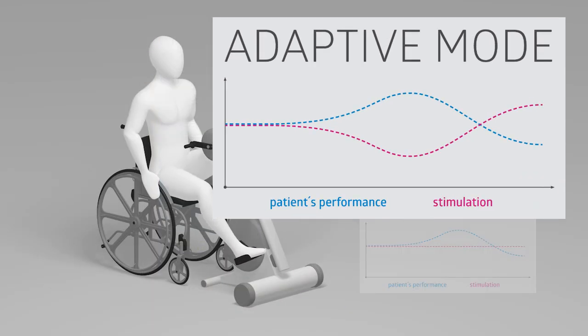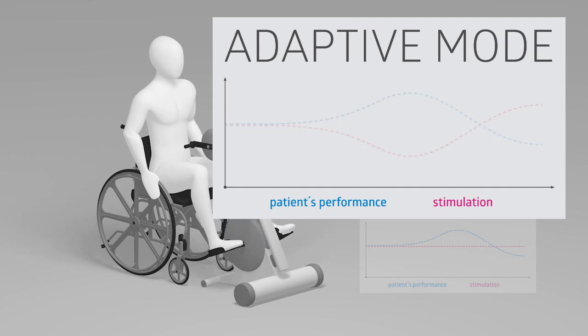In Adaptive mode, the stimulation adapts automatically to the patient's performance. When a certain speed is reached, stimulation will decrease slowly. The stimulation increases again if the patient becomes more passive.